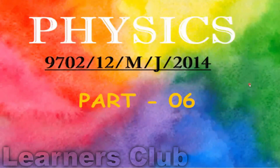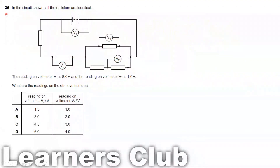May/June 2014 Physics Part 6, Question 36. In the circuit shown, all the resistors are identical. The reading on the voltmeter V1 is 8.0V.